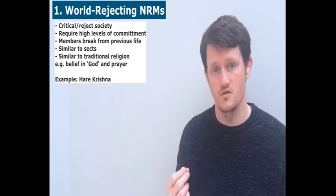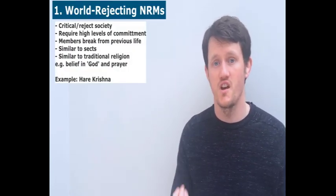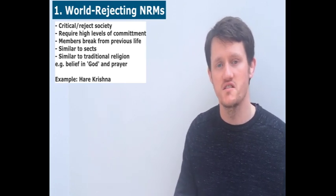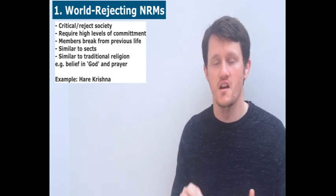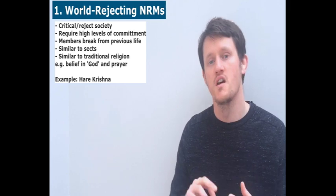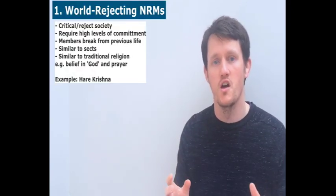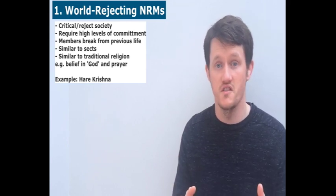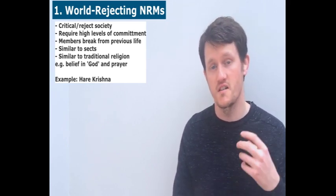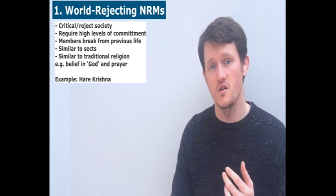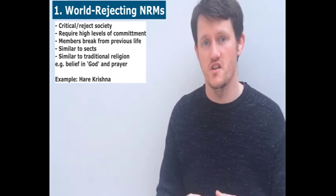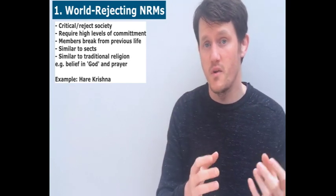The first type is world rejecting new religious movements. As you can guess, they reject society — they're highly critical of society's norms and values and believe that society needs to change radically. So they place very high demands on their members. They will have religious scriptures to read and a god-like figure they worship, similar to organised religions in those ways, but they also share a lot of features with a sect. Members have to give up their lifestyles. World rejecting new religious movements are often small, but they can be very large — up to hundreds of thousands.